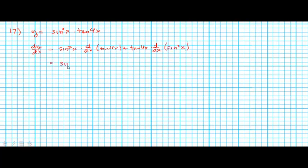Now let's process each of those derivatives. The derivative of tangent of 4x uses the chain rule: the outside function is tangent, the inside function is 4x. The derivative of the outside is secant squared, leave the inside the same, multiplied by the derivative of the inside which is 4. Then we have tangent 4x times the derivative of sine cubed. The outside function here is the cubed function, so take the derivative, reduce the power by 1, and multiply by the derivative of sine, which is cosine.